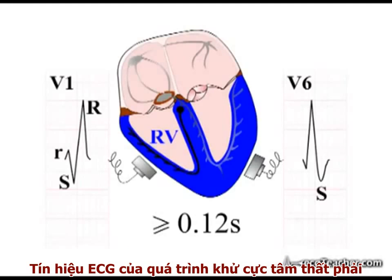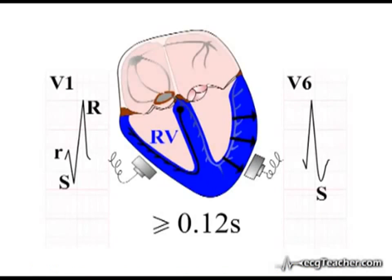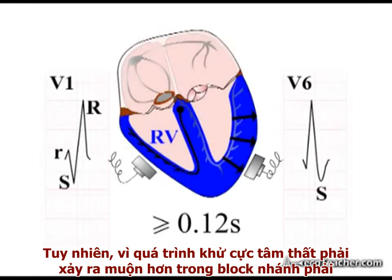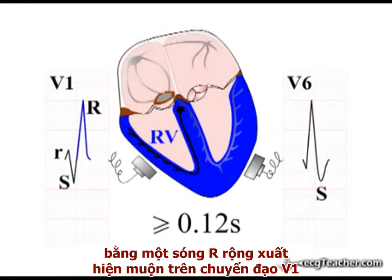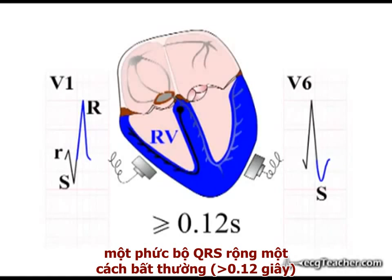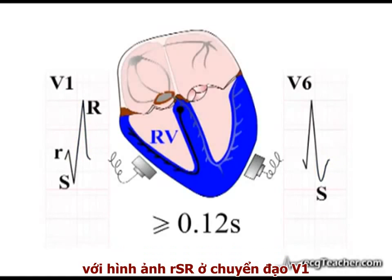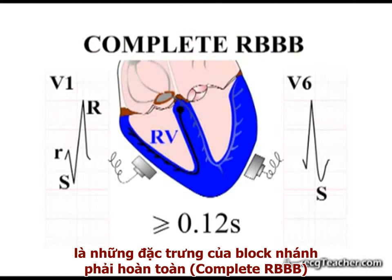The ECG signal of right ventricular depolarisation is normally masked by the signal from the much larger left ventricle. However, as right ventricular depolarisation is delayed in the presence of right bundle branch block, depolarisation of this chamber manifests as a delayed broad R wave in lead V1 and an S wave in lead V6. Abnormally wide QRS complexes with an RSR pattern in lead V1 and a delayed slurred S wave in lead V6 are the characteristic ECG findings of complete right bundle branch block.